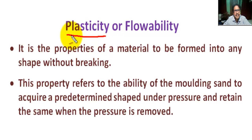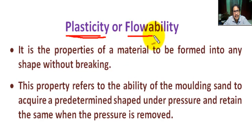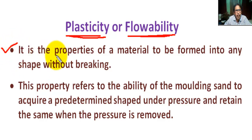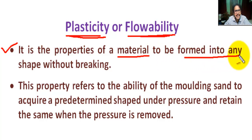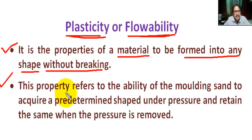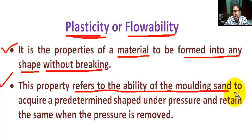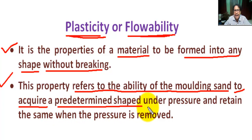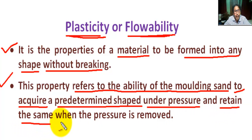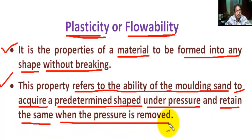Next property: plasticity or flowability. Flowability means easy to flow. It is the property of a material to be formed into any shape without breaking. This property refers to the ability of the molding sand to acquire a predetermined shape under pressure and retain the same when the pressure is removed.